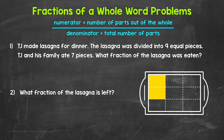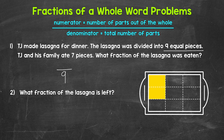Let's jump into number one. TJ made lasagna for dinner. The lasagna was divided into nine equal pieces. TJ and his family ate seven pieces. What fraction of the lasagna was eaten? Let's start with the denominator — the total number of parts. The total number of pieces the lasagna was divided into is nine. So nine is our denominator.